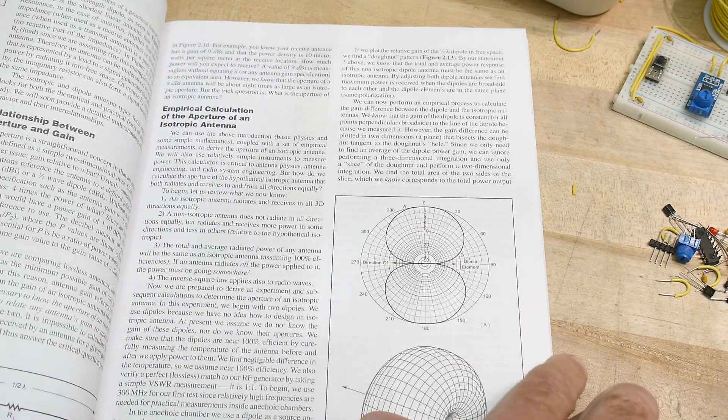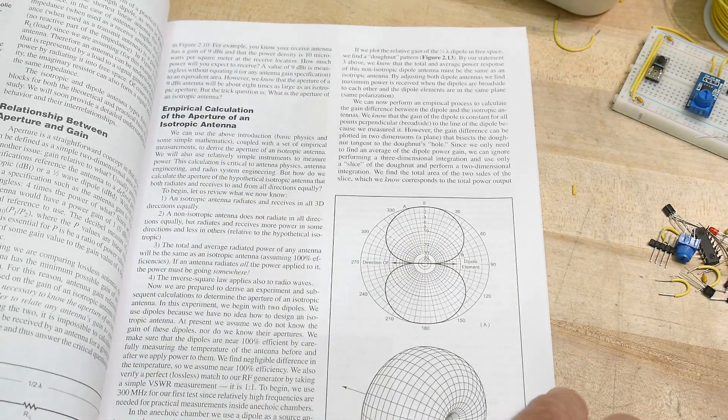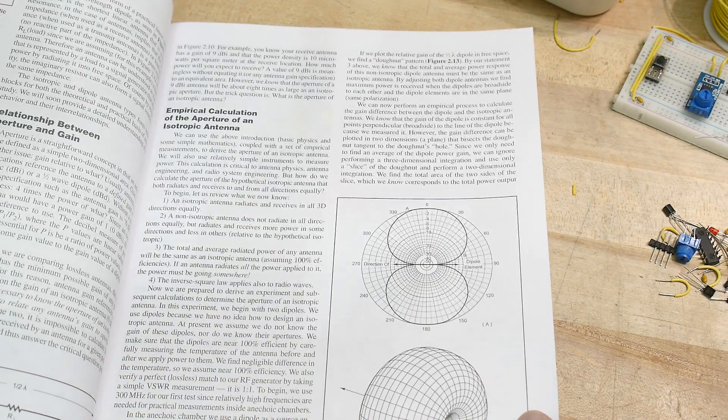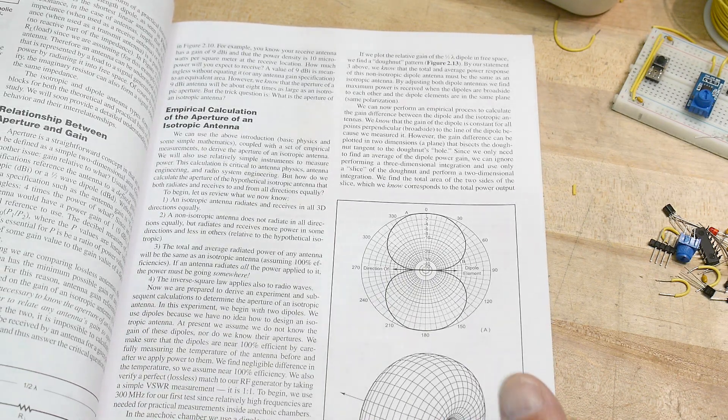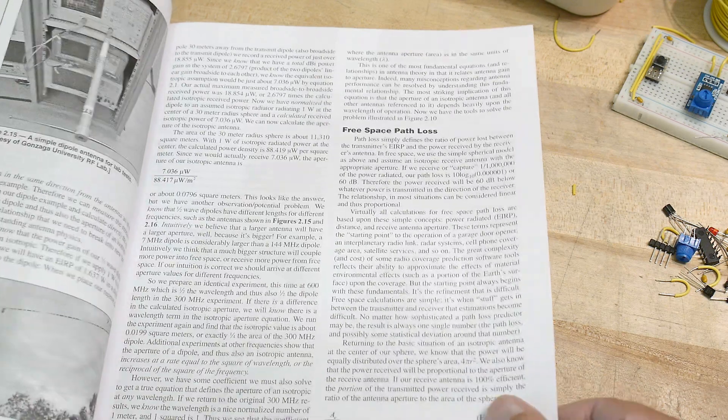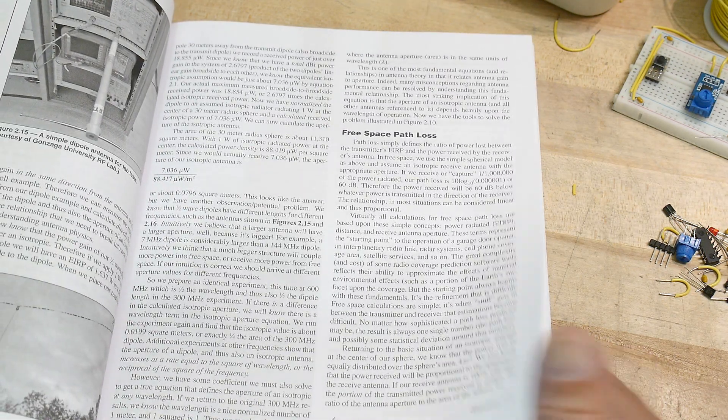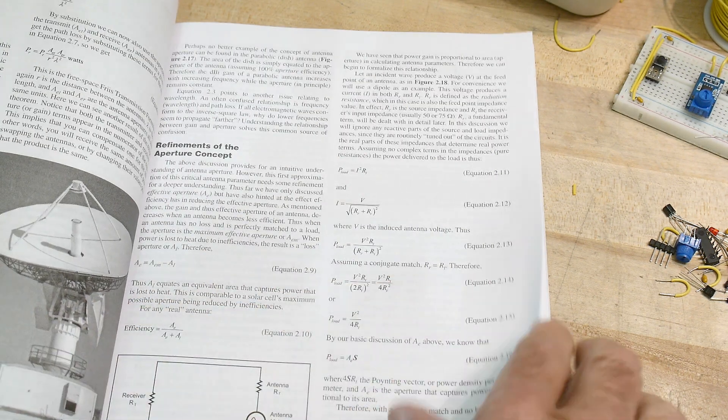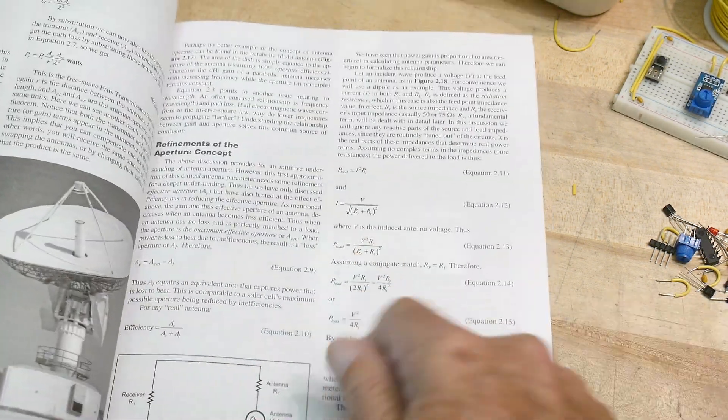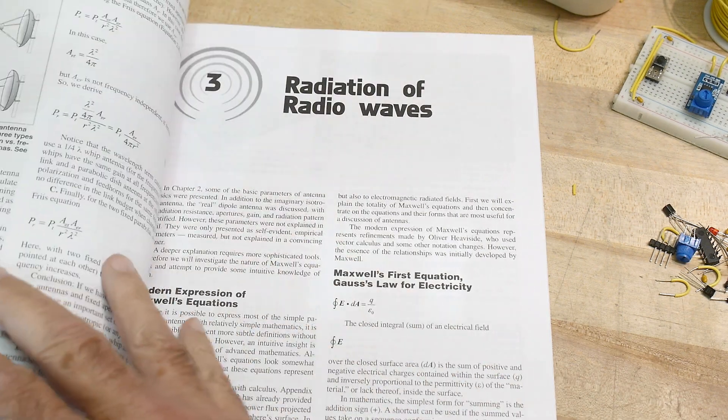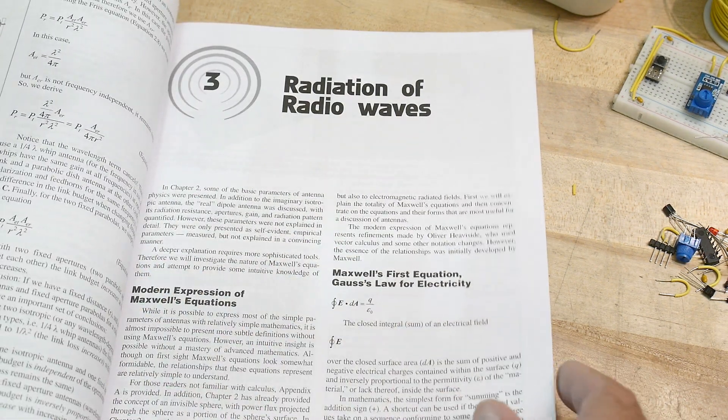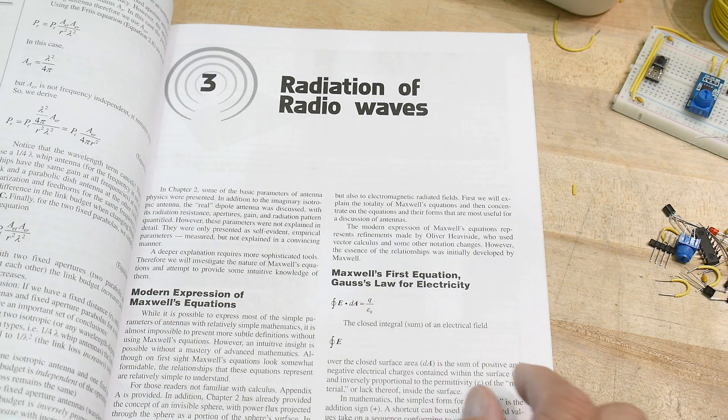Empirical calculation of the aperture of an isotropic antenna. Free space path loss. It uses some pretty cheesy formulas in the beginning. Those aren't too exciting, but then it jumps right into Maxwell's equations.